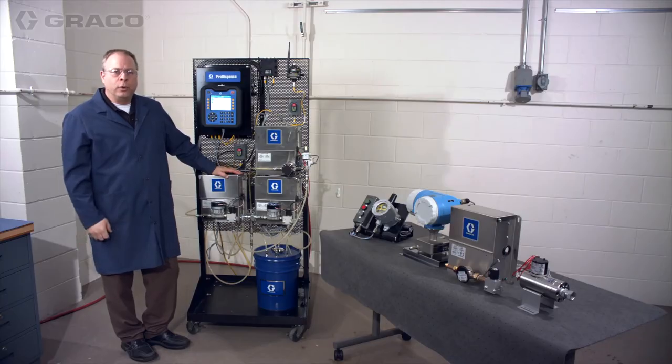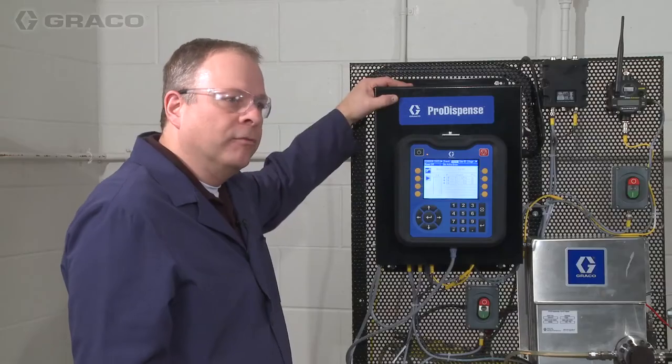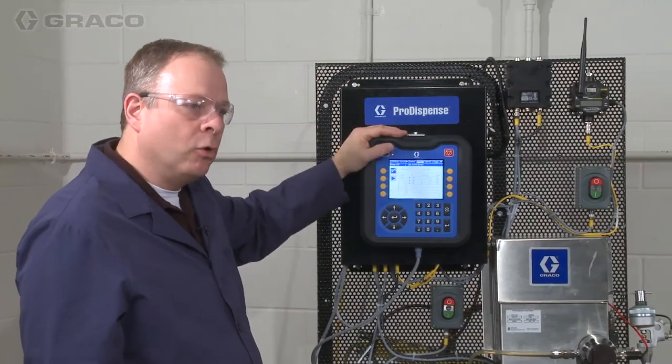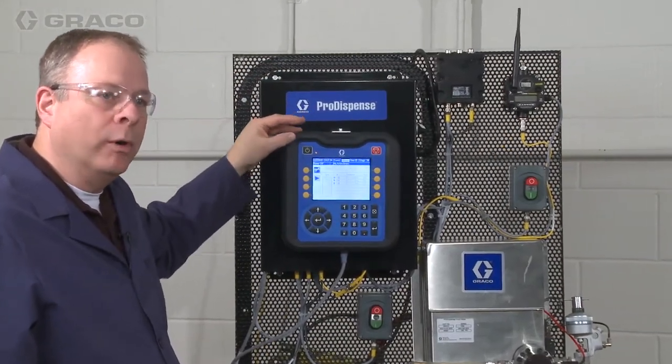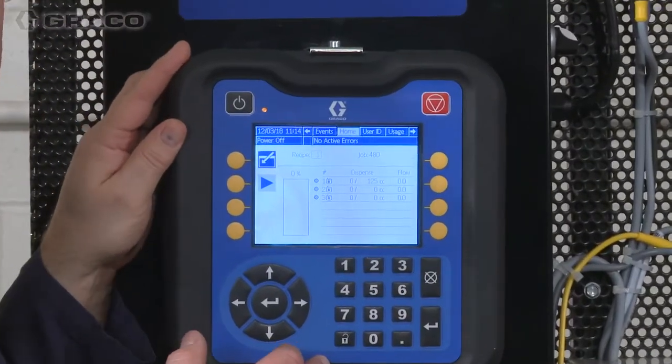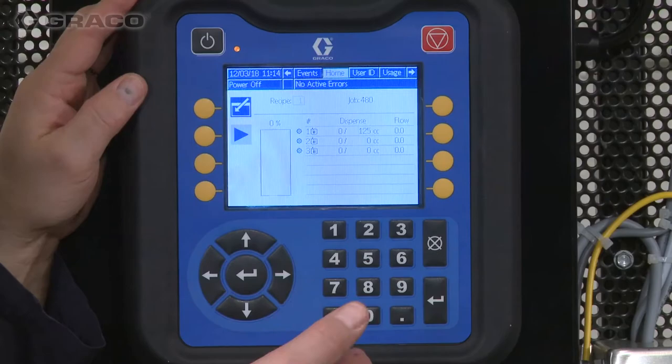I want to go through and identify some of the components of the ProDispense system, and I'm going to start at the very top here with the control panel. In front of the control panel is the ADM, or Advanced Display Module. The ADM is where the operator is going to configure the system as well as program a recipe.